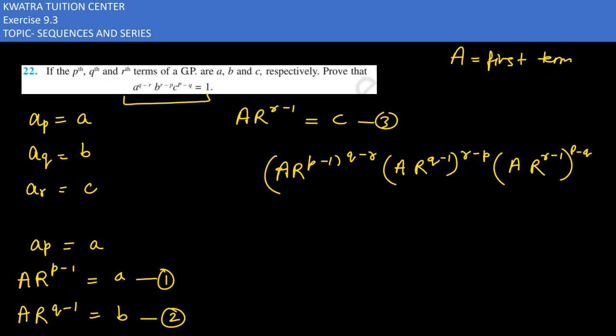Now the power of a, when raised to the power q minus r, will multiply with p minus 1. The power of a here is r minus p, multiplied with q minus 1, r minus p. Then a raised to p minus q and r power will be r minus 1 times p minus q.